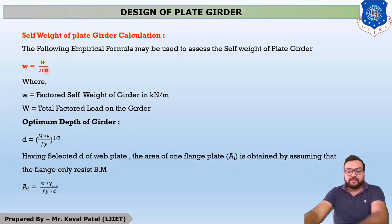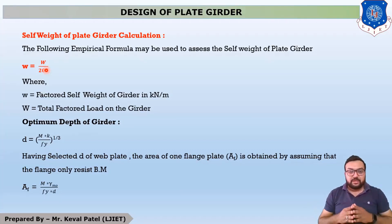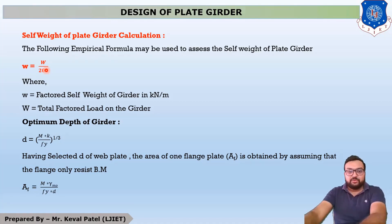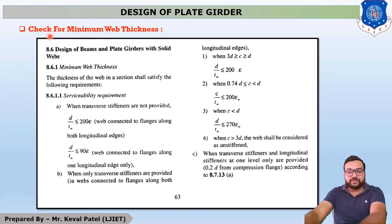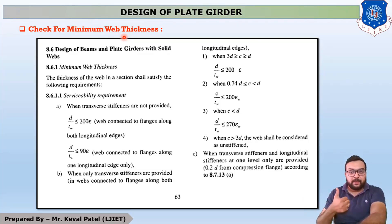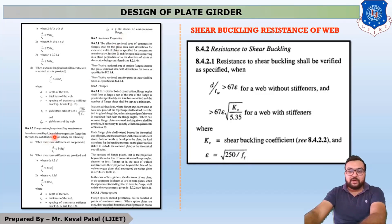The selected section's basic dimensions are now determined, but we need to check whether the section is safe or unsafe. The first check is for minimum web thickness. There are two sub-checks: first is the check for serviceability, given on page 63 of IS 800-2007, and second is the compression flange buckling requirement, given on page 64.